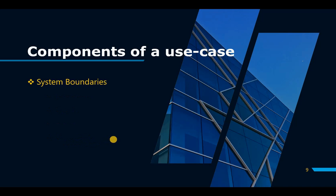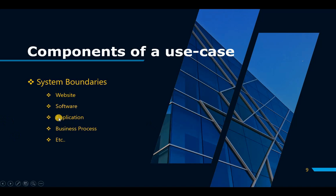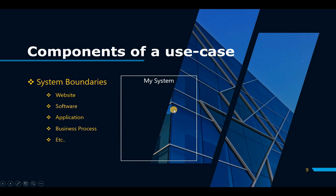A system can be a website, software application, a business process, or basically any idea you can think of. A system boundary is always represented by a rectangle. It is very important to note that the system does not include the actors inside — the actors are always outside the system. Your primary actor goes to the left, your secondary actor goes to the right, and the name of the system is always at the top inside the rectangle.